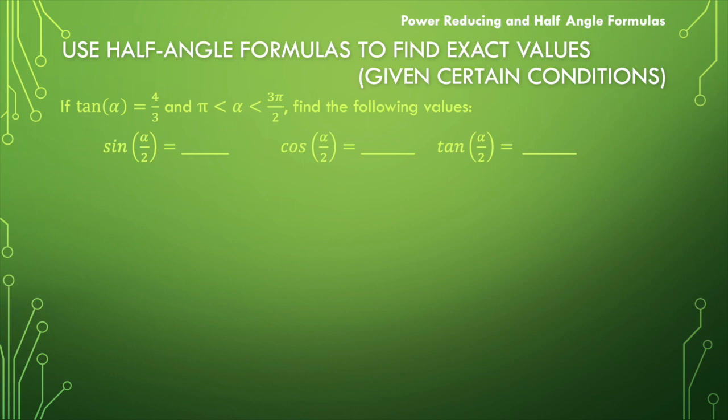In order to find the information about alpha over 2, we first want to think about all the information we can gather about alpha. We know the tangent of alpha is 4 over 3, and we know that this alpha angle is in the third quadrant between pi and 3 pi over 2. So let's start by finding sine of alpha and cosine of alpha from what we know.